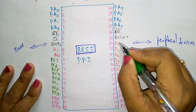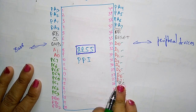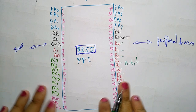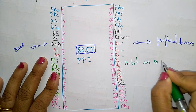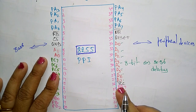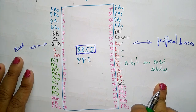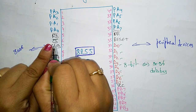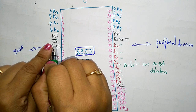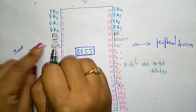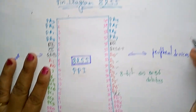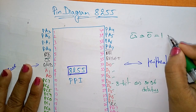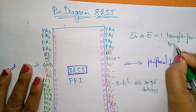First, let us look at D0 to D7. This is an 8-bit bidirectional bus connected to the 8086 data bus for transferring data. Next, the chip select pin CS bar is an active low signal. Whenever CS bar is low, data is transferred from the 8086 microprocessor to the 8255.